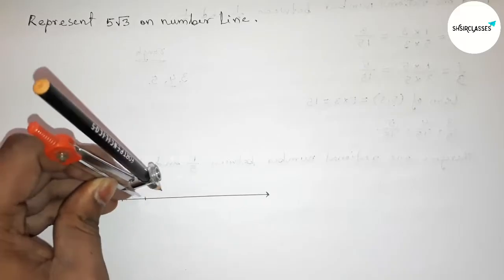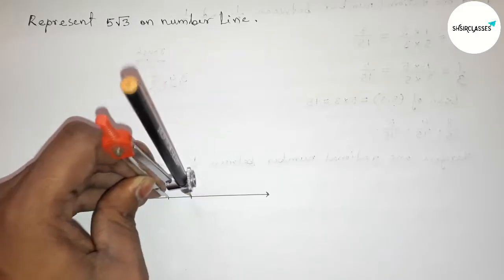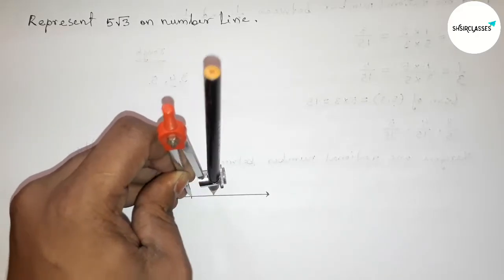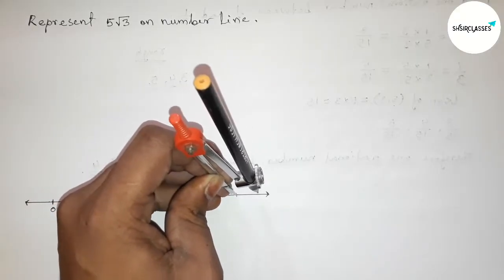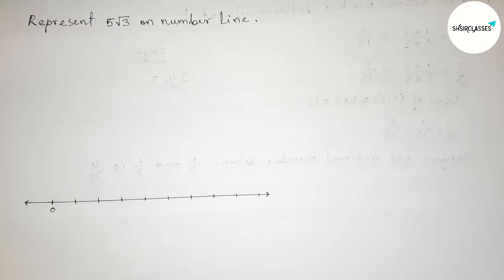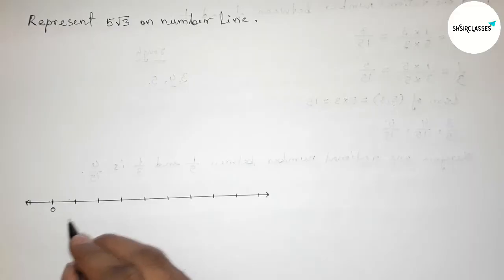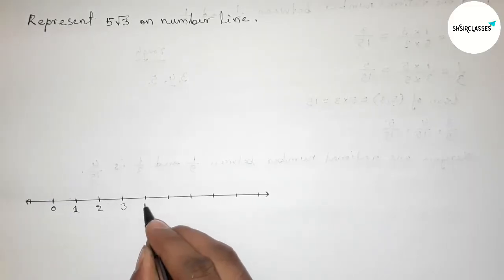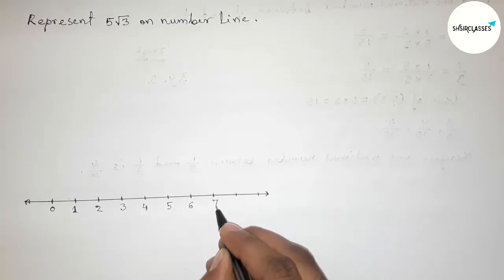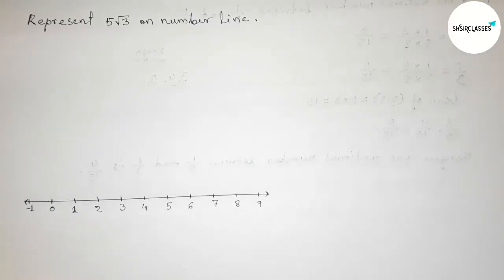You can use a scale to mark the numbers on the line, but here I am using the compass. The length between any two numbers is one unit length. Putting the compass on point zero and cutting: one, two, three, four, five, six, seven, eight, nine, and on this side minus one and so on. This is the number line.